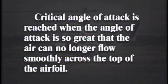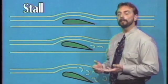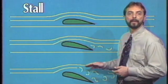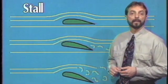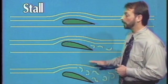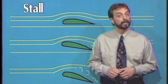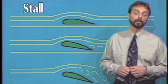Critical angle of attack is reached when the angle of attack is so great that the air can no longer flow smoothly across the top of the airfoil. The airflow becomes turbulent and drag increases. There is a sudden increase in pressure on top of the wing and lift is lost. We say that the wing, or rotor blade, has stalled.